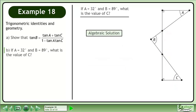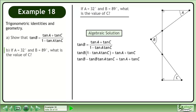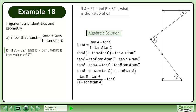Now we'll attempt an algebraic solution. Begin with a formula from Part A. Cross multiply. Distribute tanB through the brackets. Collect terms with C on the right side of the equation. Factor out tanC. Divide both sides to isolate tanC.